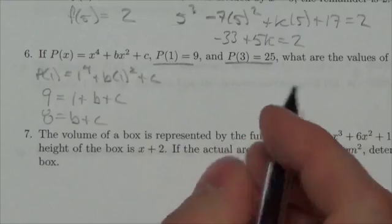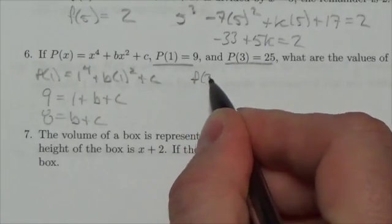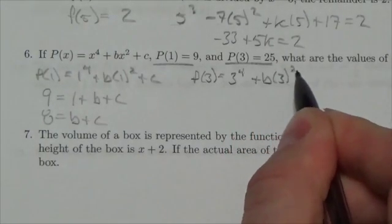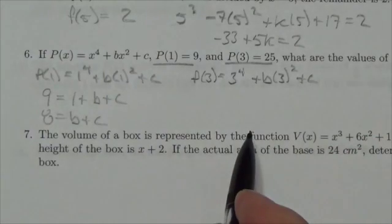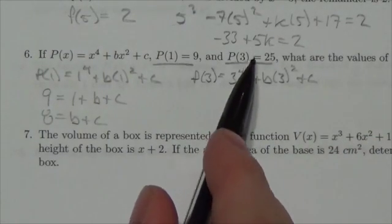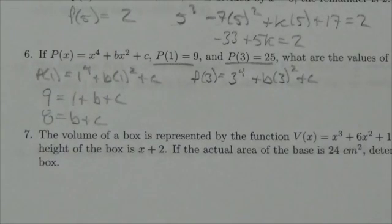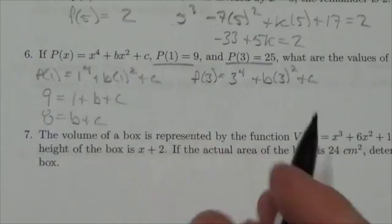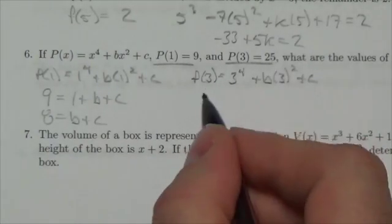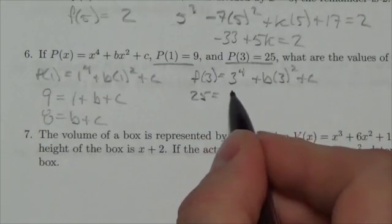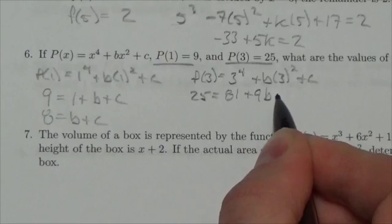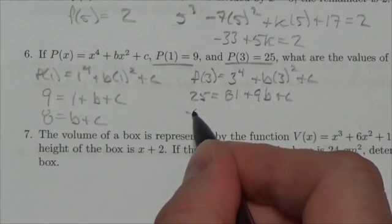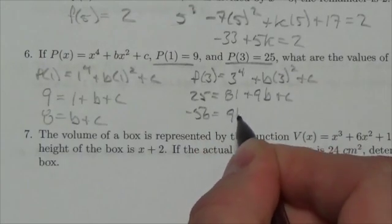Let me do the same thing over here with this information, except this time I'm plugging in a 3. So P at 3 is going to equal 3 to the 4 plus b times 3 squared plus c. I'll focus on this P of 3 and make sure that you're applying that properly. So I'm replacing the x with a 3 every time I see it in the equation. And now P of 3 is equal to 25. So I'll replace P of 3 with 25. This is going to be 81 plus 9b plus c, and so now I'm going to bring that 81 over. This will be minus 56 is equal to 9b plus c.